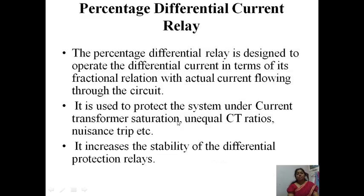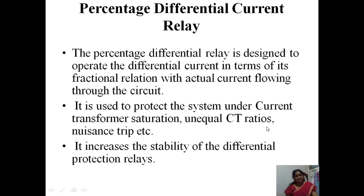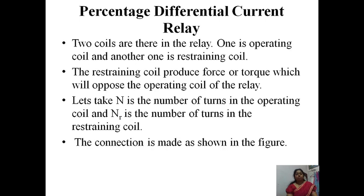This is the biased or percentage differential relay. The percentage differential relay is designed to operate based on the differential current in terms of its fractional relation with the actual current flowing through the circuit. It is used to protect the system under current transformer saturation, unequal CT ratios, nuisance trip, etc. It increases the stability of differential protection relays.